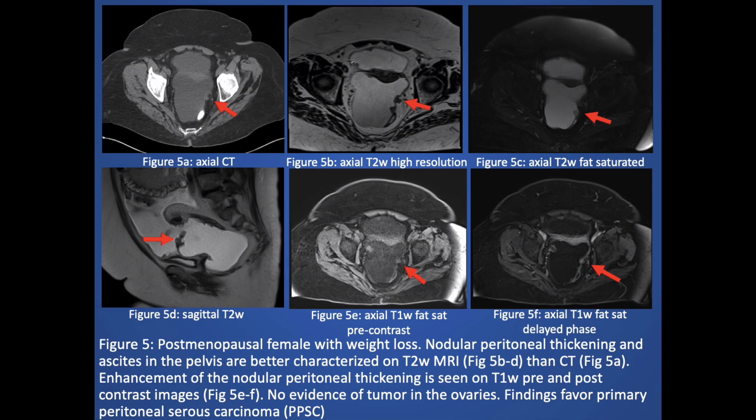Here is another case of a postmenopausal woman with weight loss. There is nodular peritoneal thickening and ascites in the pelvis, better characterized on the MR images. There is enhancement of the nodular thickening seen on the post-contrast images, and there is no evidence of tumor in the ovaries. These findings are consistent with primary peritoneal serous carcinoma.